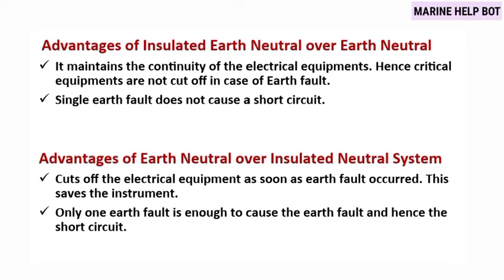Moving to the advantages of the insulated neutral system over the earth neutral system: it maintains continuity of electrical equipment, so critical equipment is not cut off in case of an earth fault, and a single earth fault does not cause a short circuit. The advantages of the earth neutral system over the insulated neutral system are: it cuts off the electrical equipment as soon as an earth fault occurs, which saves the instrument, and only one earth fault is enough to cause a trip and hence prevent a dangerous short circuit.